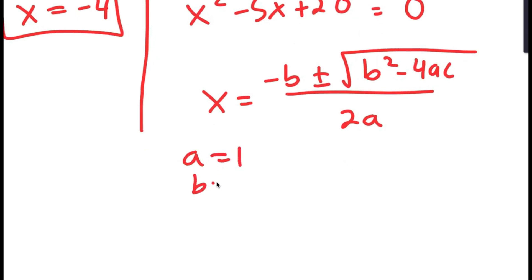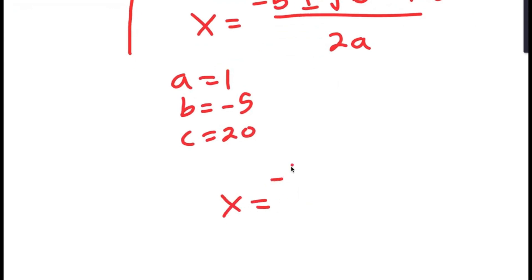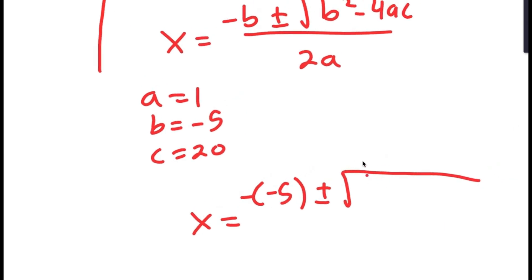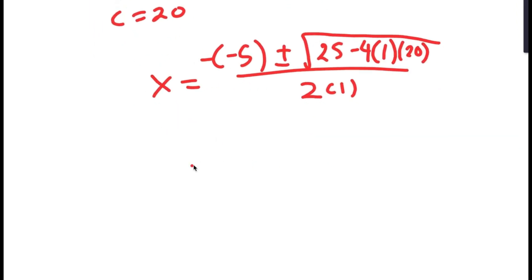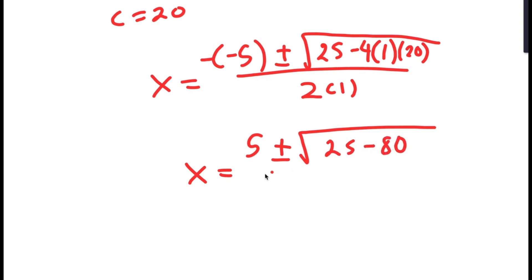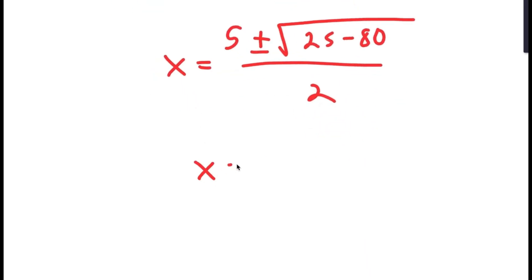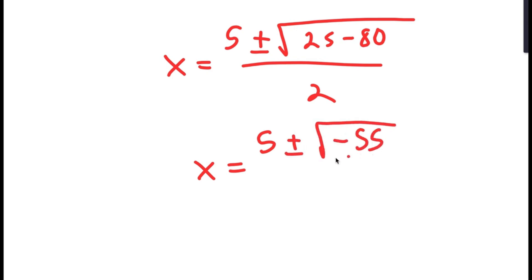Here a equals 1, b equals negative 5, and c equals 20. So x equals 5 plus or minus the square root of negative 5 squared minus 4 times 1 times 20, all over 2. That simplifies to 5 plus or minus the square root of 25 minus 80 over 2, which equals 5 plus or minus the square root of negative 55 over 2.